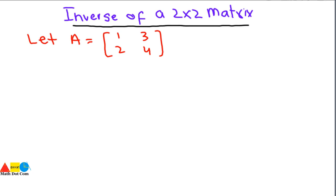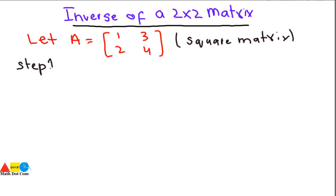Let's say you are having a matrix — it is a square matrix. For finding the inverse, a matrix must be a square matrix. We'll write this as a condition in the bracket: it must be a square matrix. Now, what will be the steps in order to find its inverse? Step 1 is to find whether the given matrix is singular or non-singular.